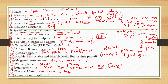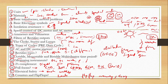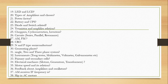Counters and flip-flops — a counter which counts things is called a counter. Flip-flops are memory storing elements. Next: LED and LCD — these are the differences.